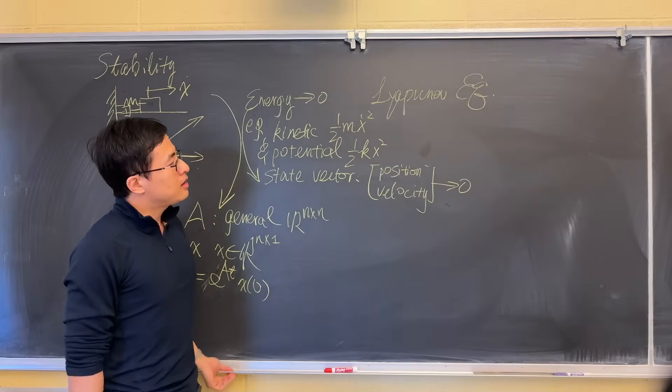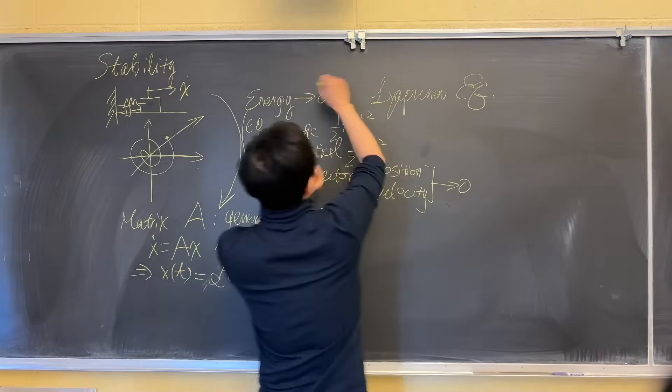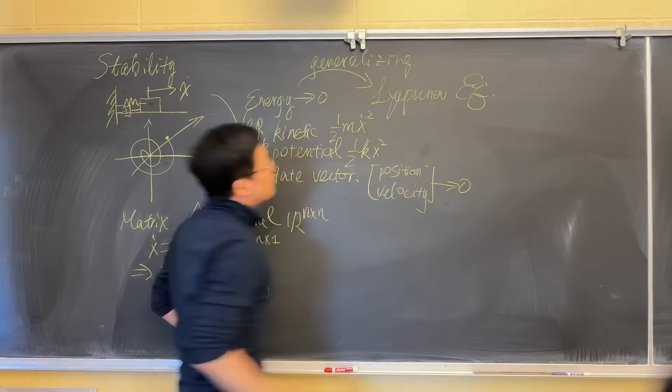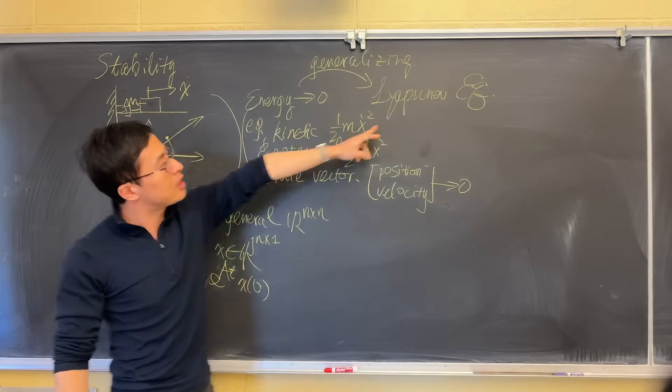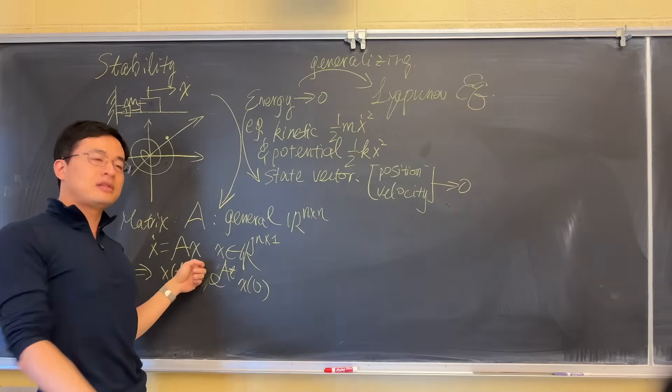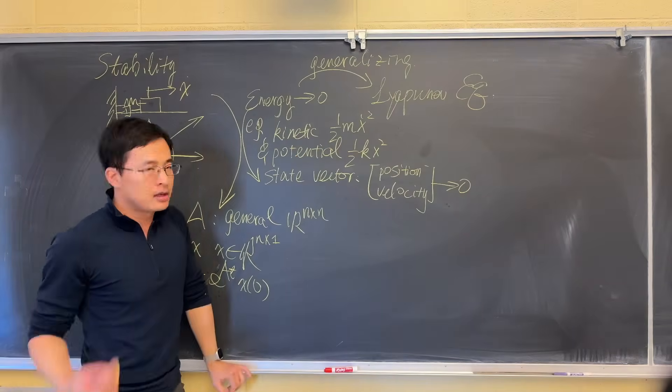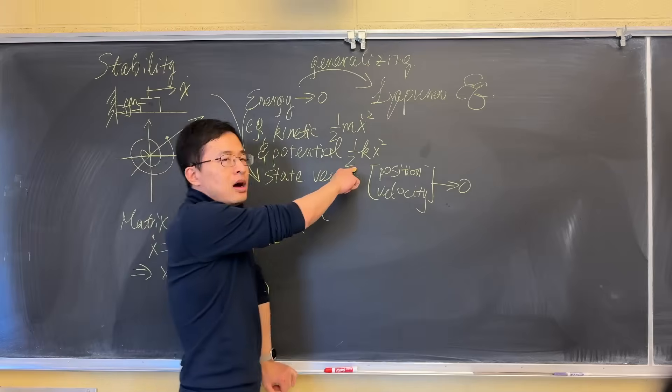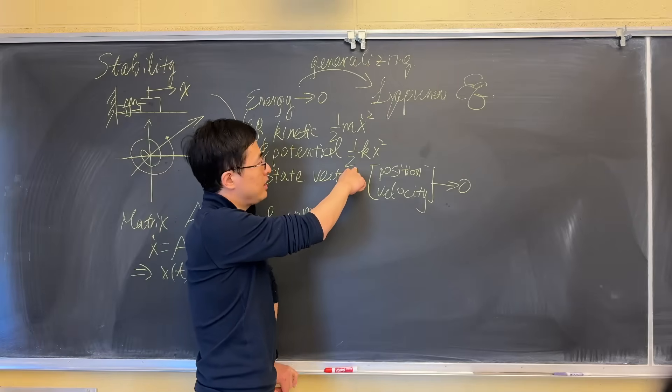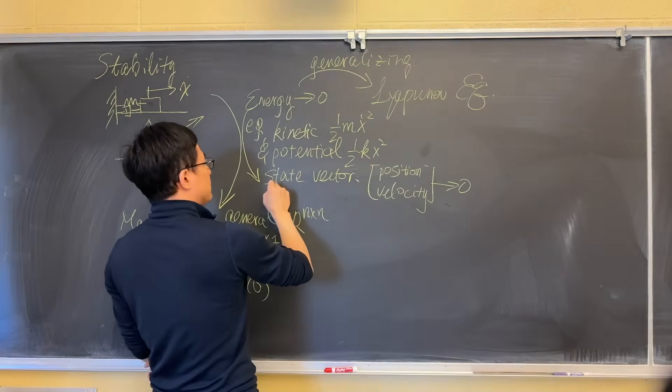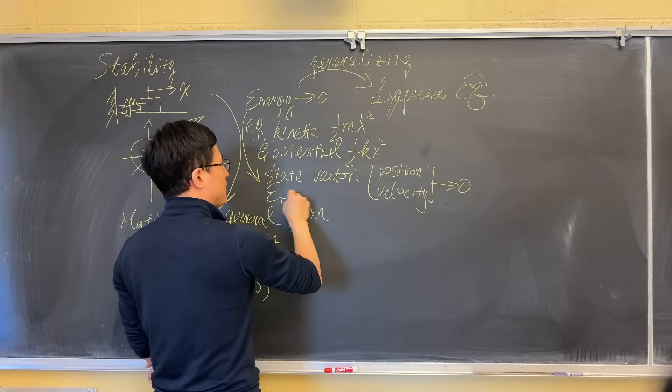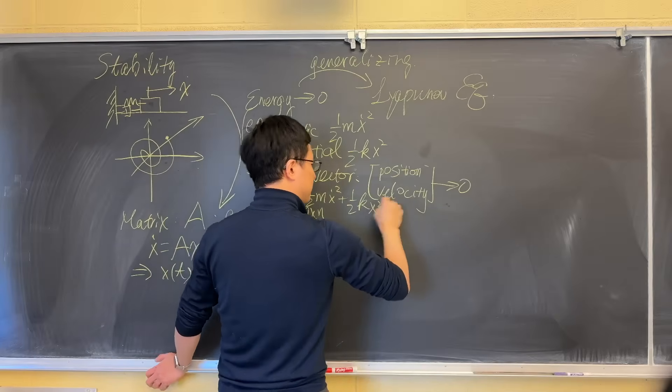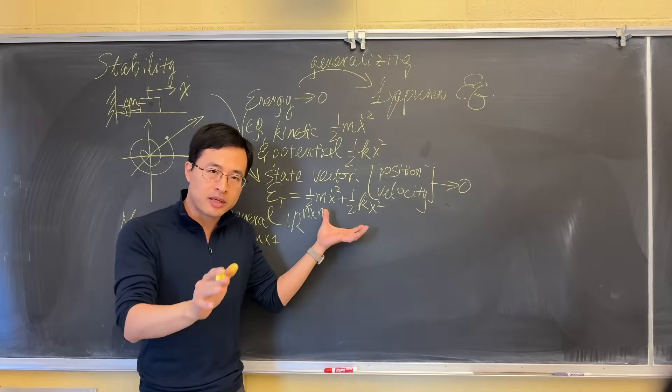Now, how can we generalize this? This generalization will become the Lyapunov equation. The energy equation will become the Lyapunov equation for this dynamic system case. And there's another thing that's interesting to see—how these energy equations are written. The total energy E_T is these two combined together. So this is the classical way to see this.